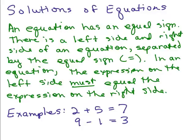We're going to be working with equations and try to determine if a given solution is really correct. An equation has an equal sign — there's a left side and a right side separated by the equal symbol, and if it's a true equation, the expression on the left side must equal the expression on the right side. Looking at the first one: on the left side we have 2 plus 5 and on the right side we have 7. Since 2 plus 5 is 7, the left side equals the right side, so this is a true equation.